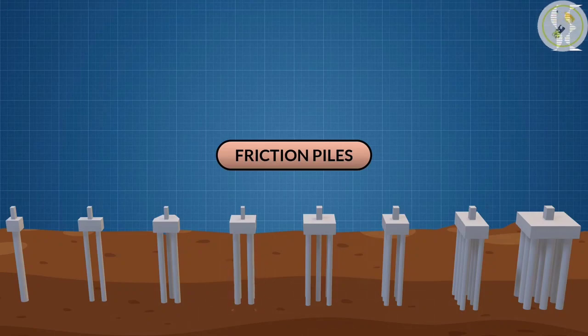On the other hand, friction piles can be more economical and flexible than end-bearing piles as they can use the available soil strength along the pile length. However, they may have lower load capacity than end-bearing piles and may be influenced by changes in soil moisture or temperature.